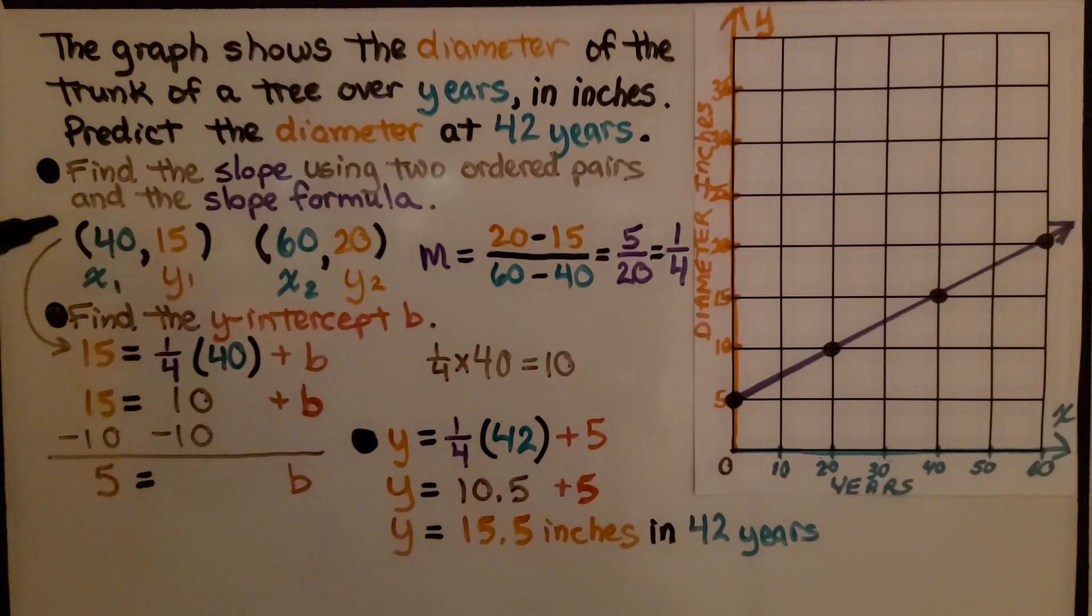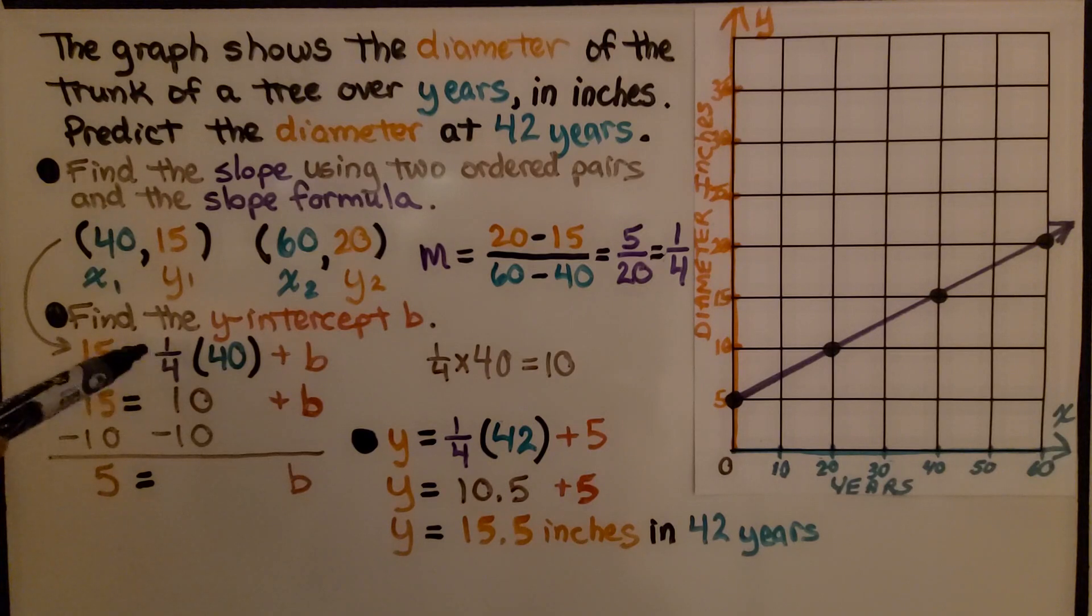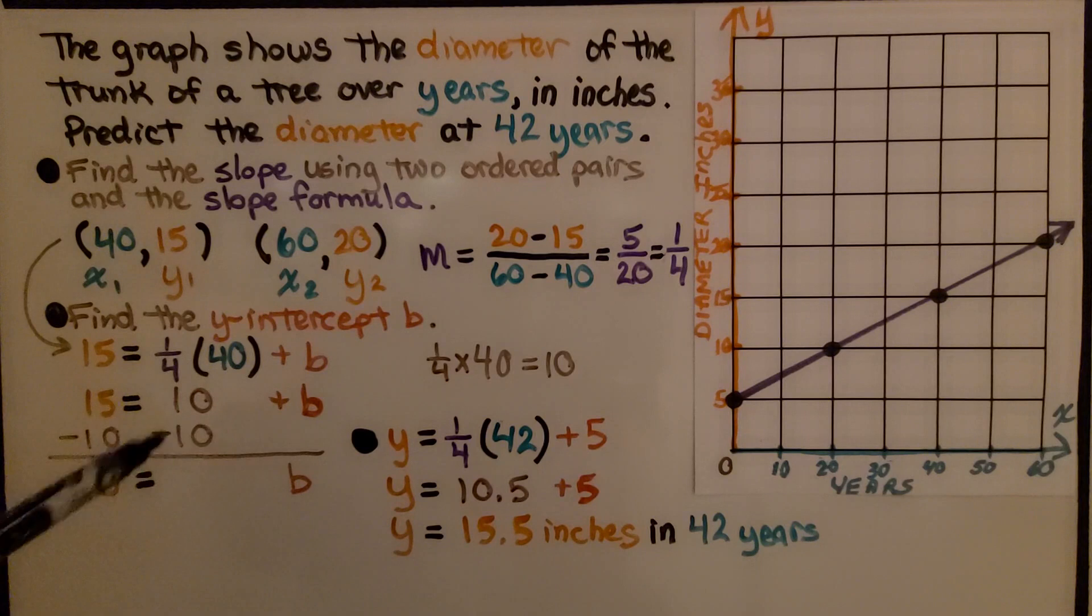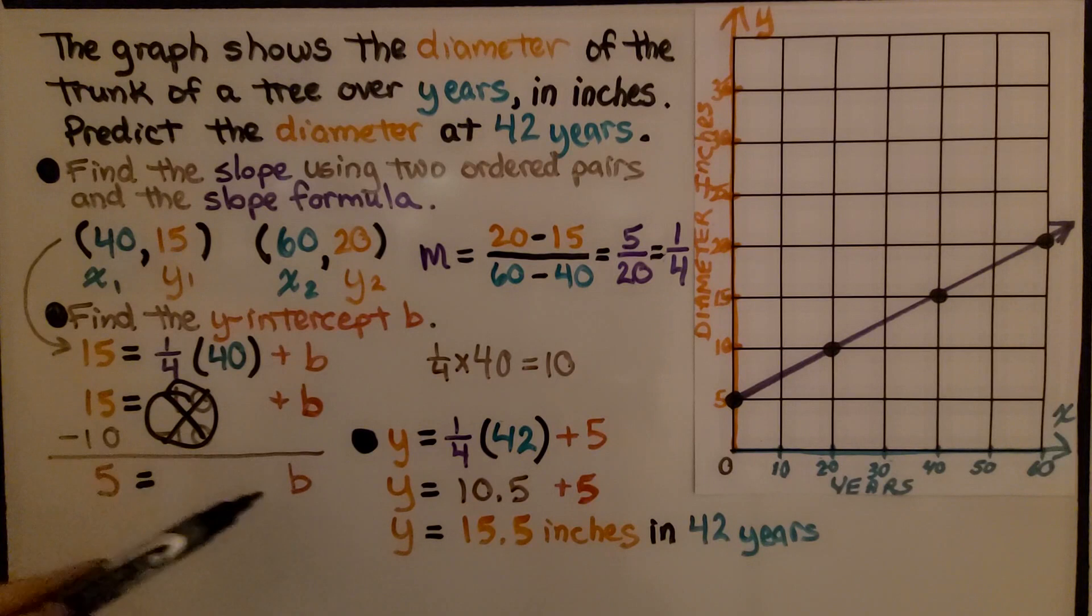Now we find the y-intercept b. We use one of the ordered pairs and substitute the values into an equation in slope-intercept form with our newfound slope. We're going to have 40 for x and 15 for y. If we do 1/4 times 40, that's equal to 10. Now we subtract the 10 from both sides of the equation to isolate b. By doing a positive 10 plus a negative 10, we make a zero pair. And on this side, when we subtract 10, we get 5. We've now isolated b by itself and we know that it's equal to 5.